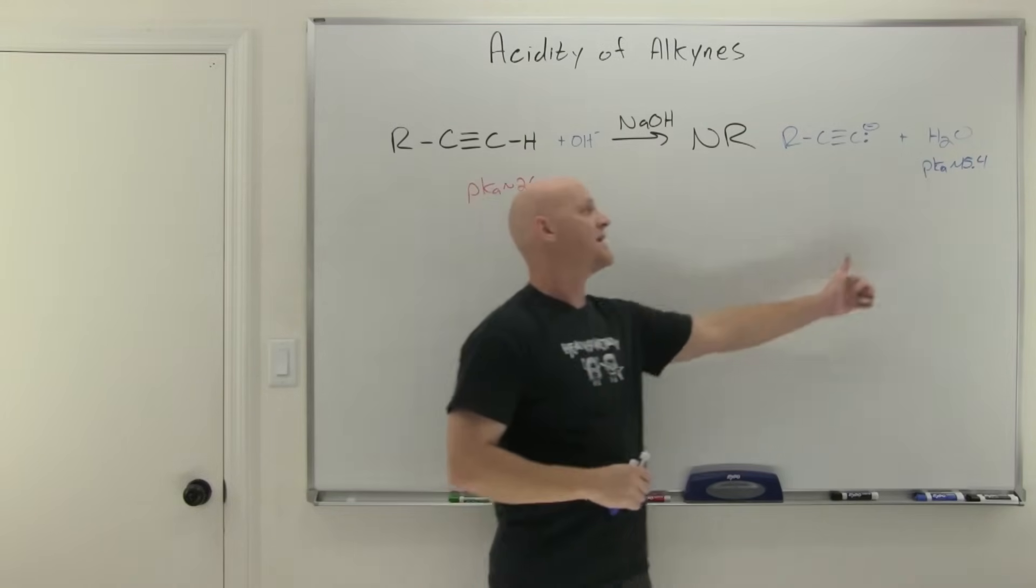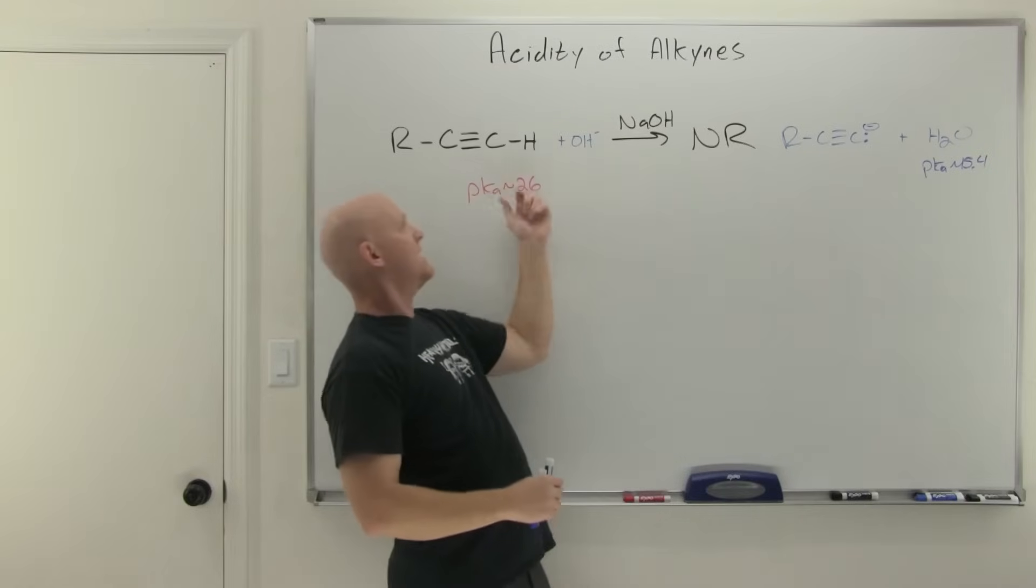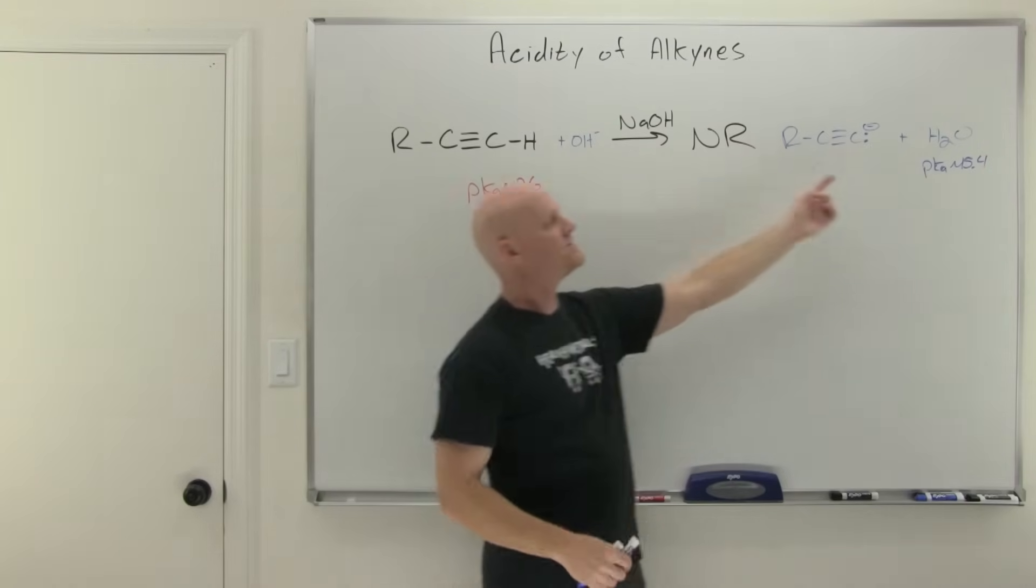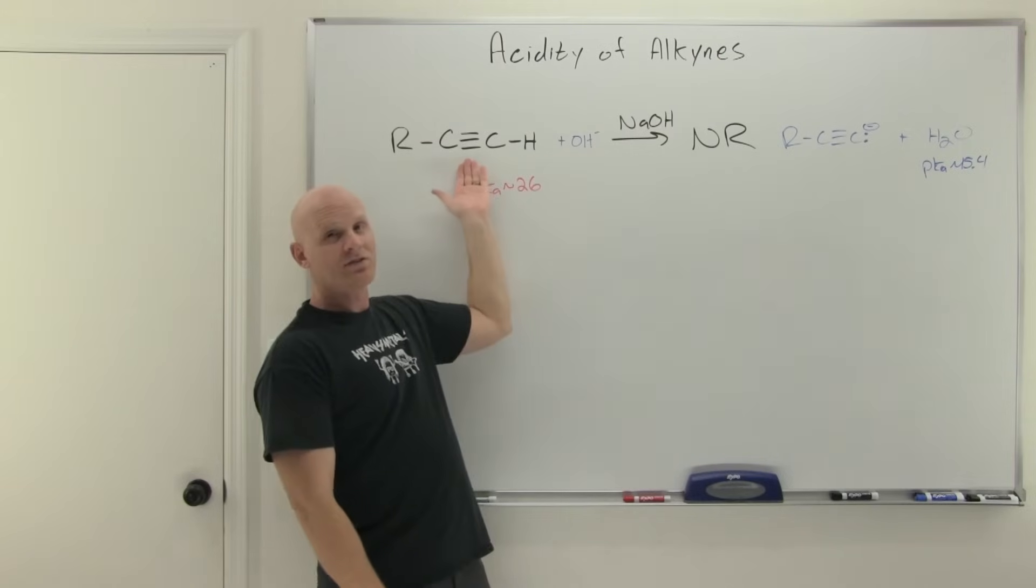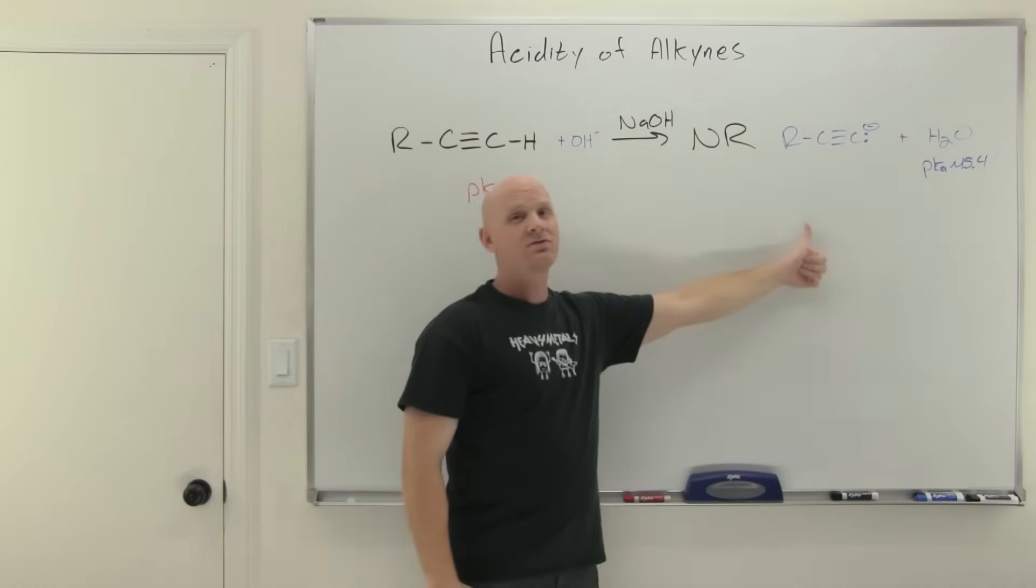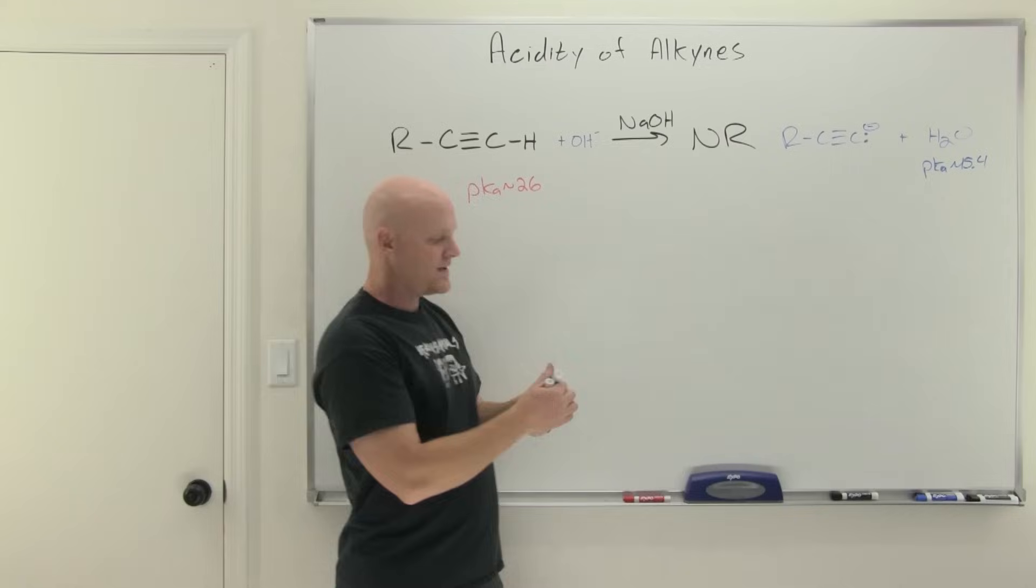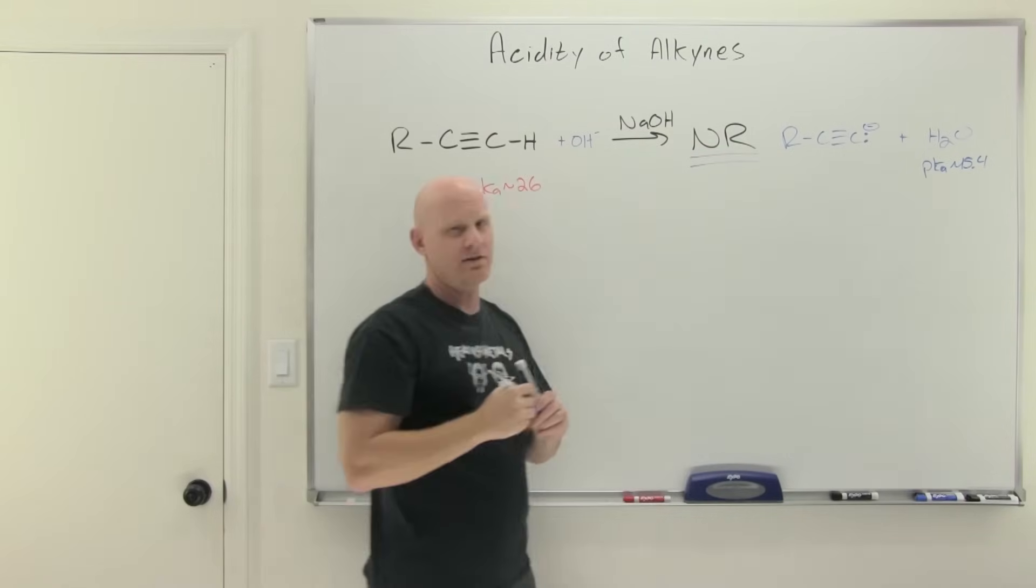And so we can see that the equilibrium here is going to lie towards the weaker acid and base. And a pKa of 26 is a much weaker acid than a pKa of 15.4. And that's why this is not going to work. This thing is way less acidic than water. And the equilibrium lies so far back towards the reactants that essentially we just say that no reaction happens here.